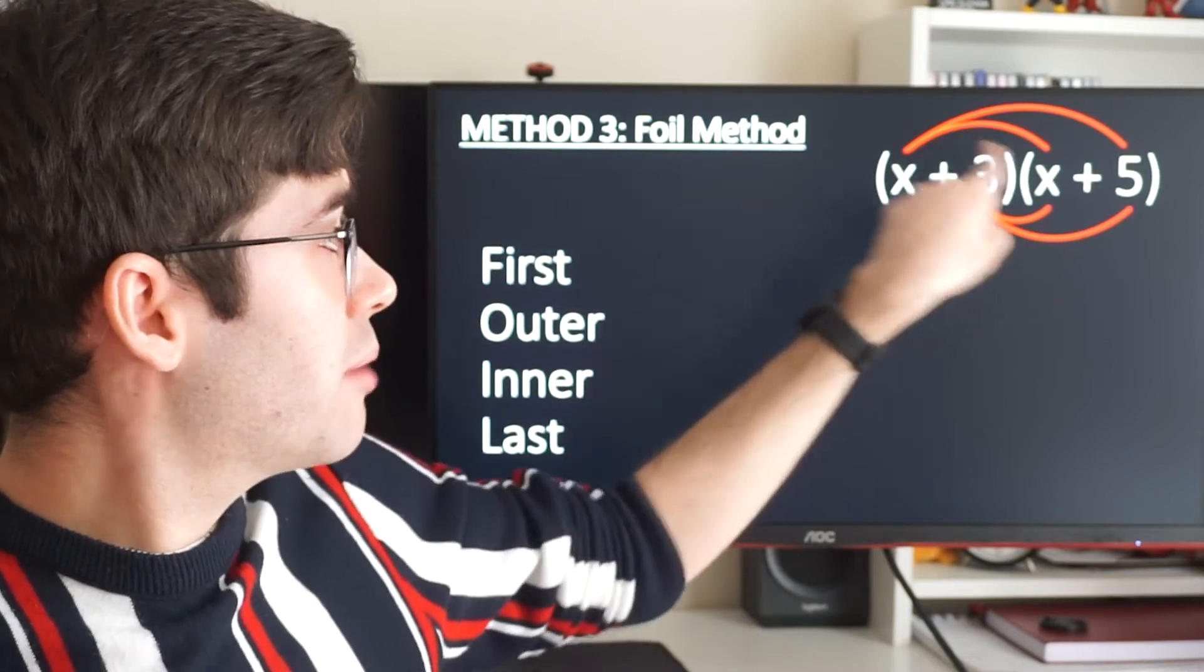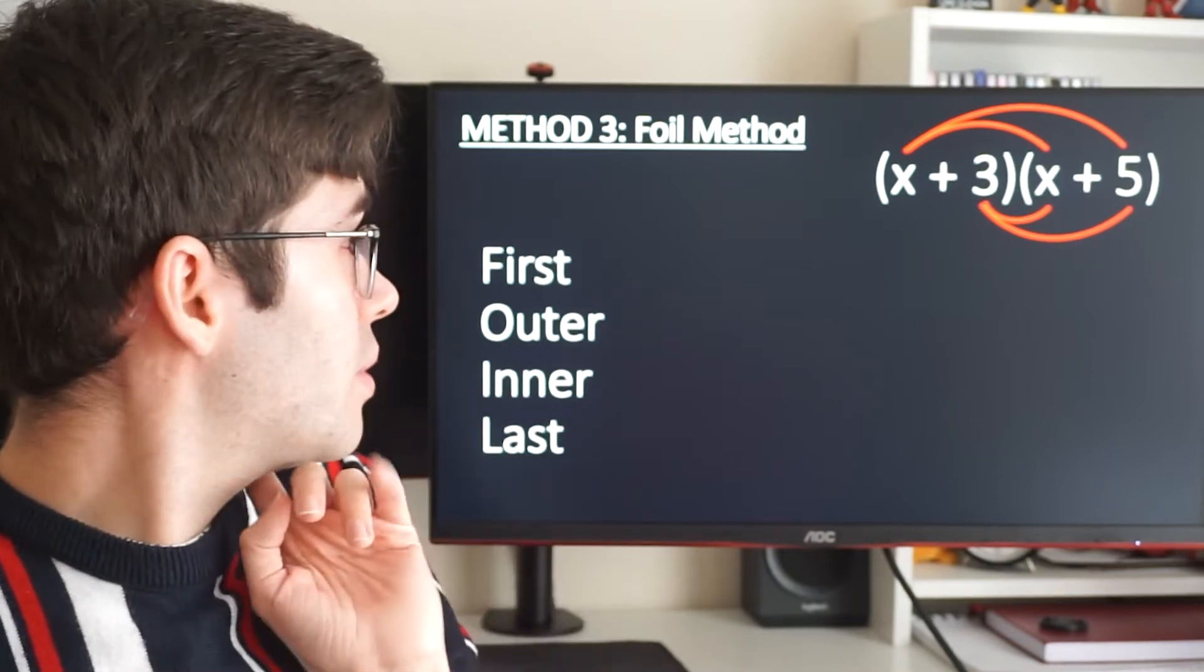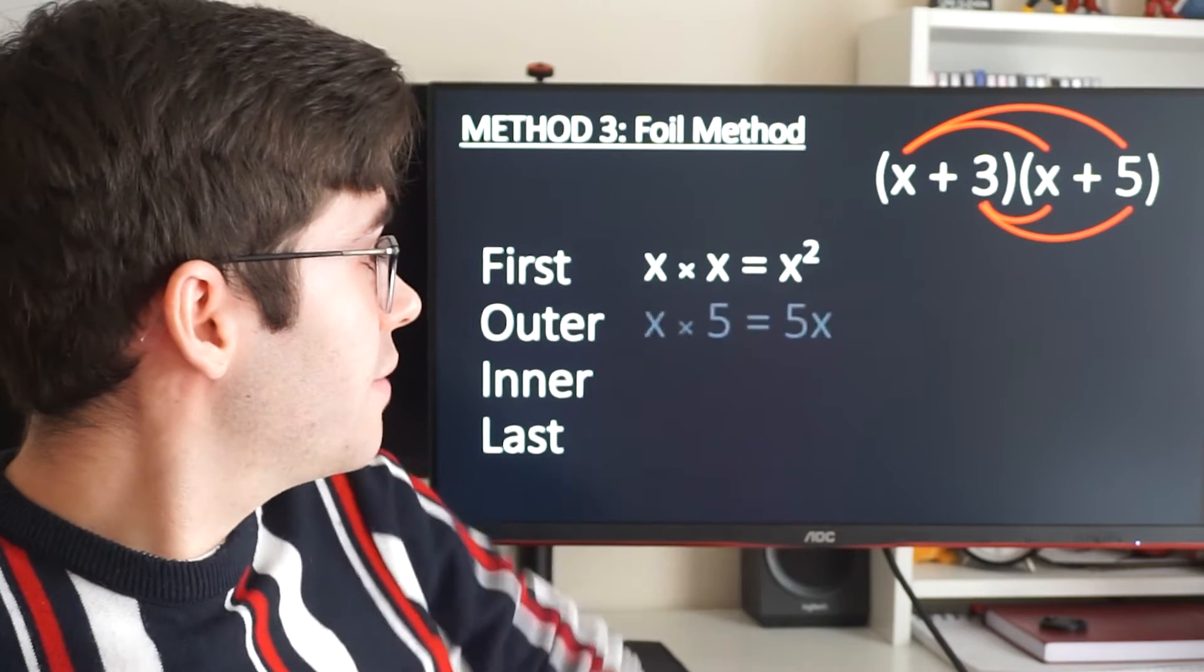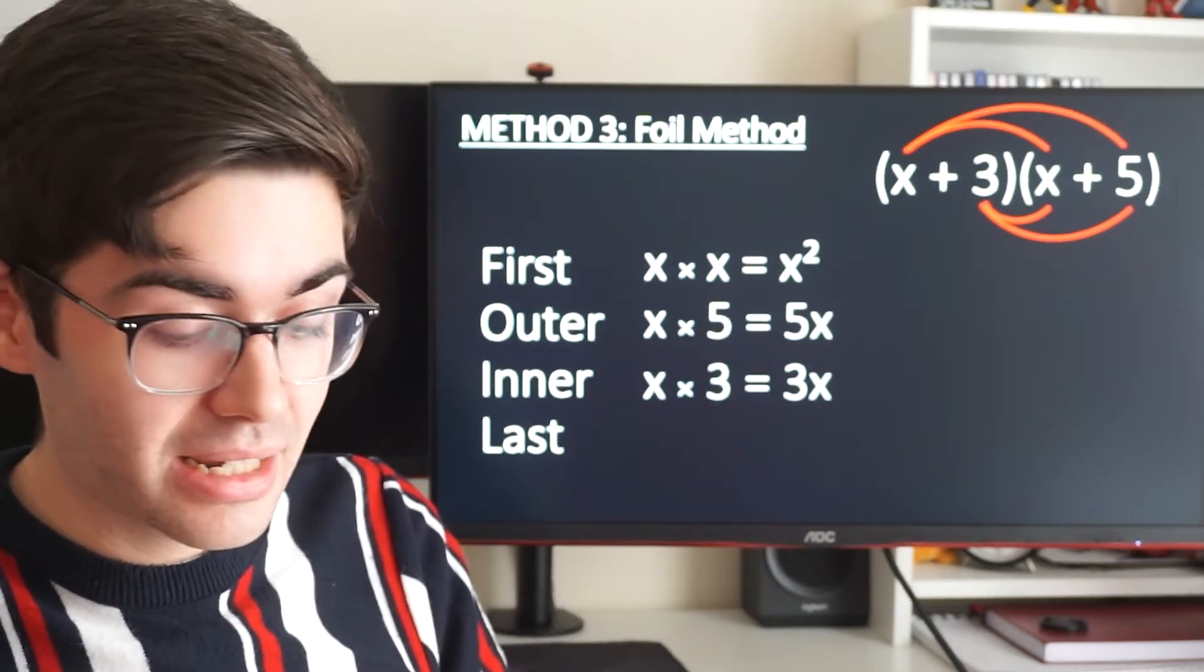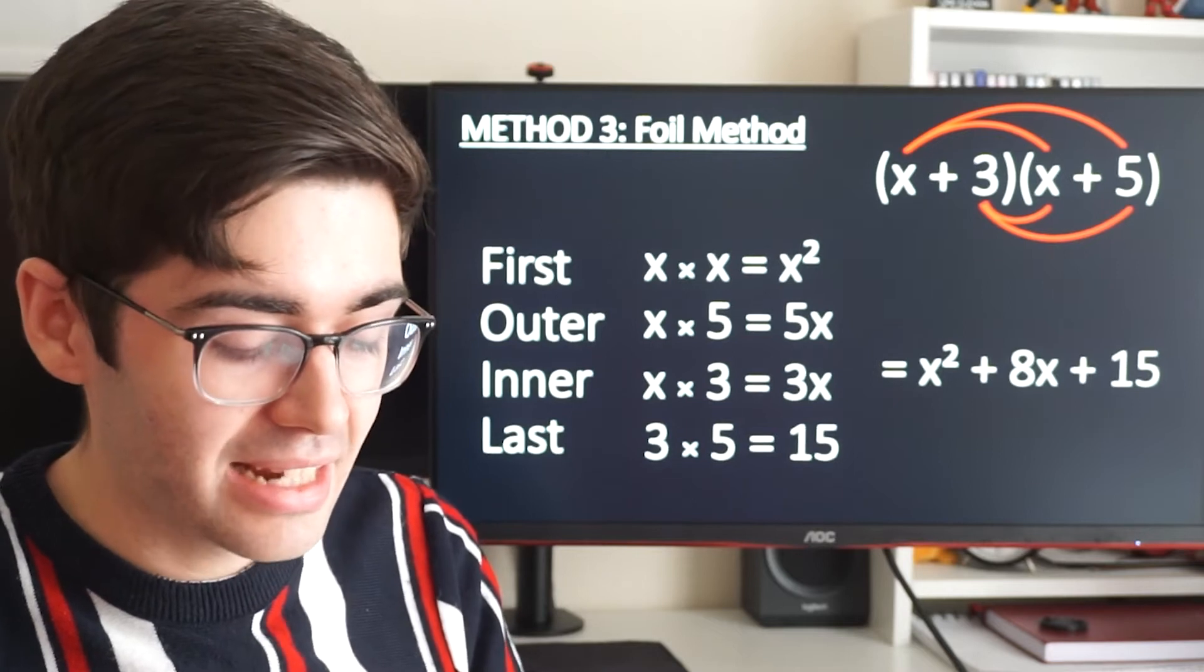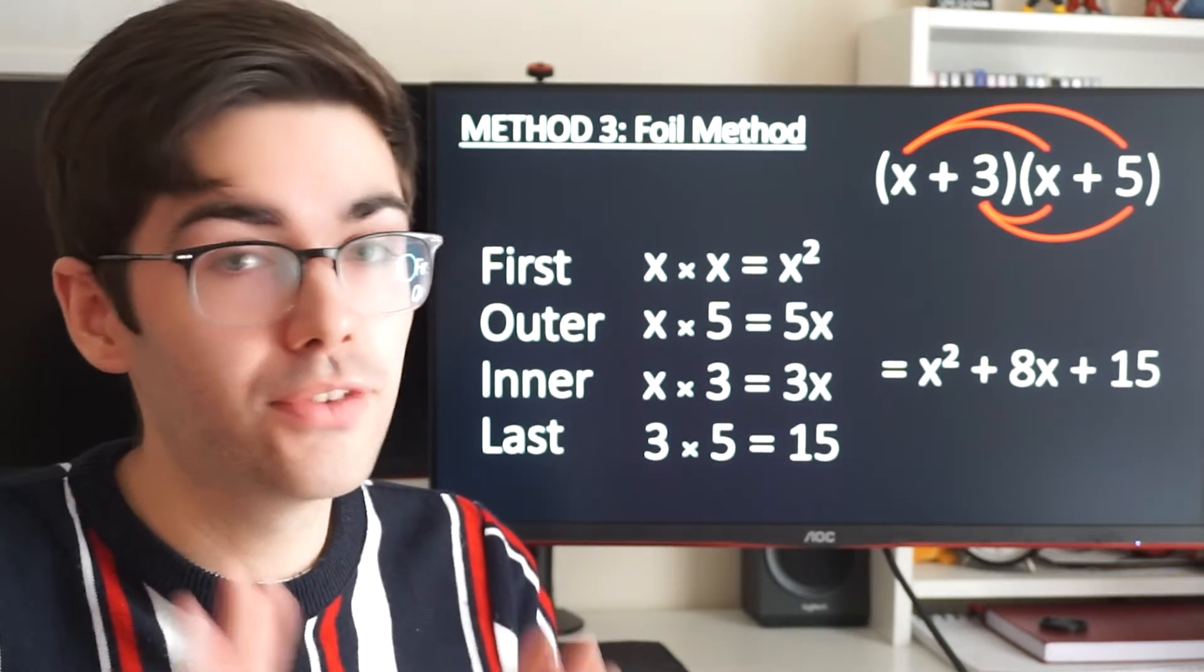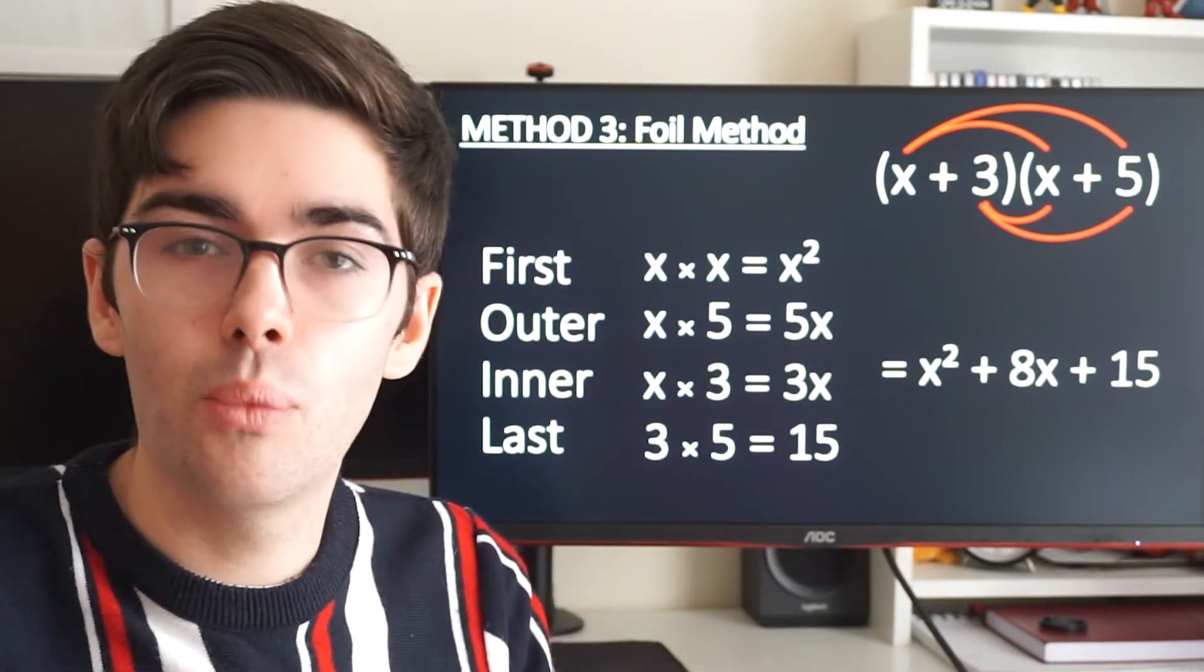So the first in each bracket, the outers, the inners, and then the last in each bracket. And then we times them together. So the first ones, x times x is x squared. The outers, x times 5 is 5x. The inners, 3 times x is 3x. And the last, 3 times 5 is 15. Again, we add it all together, then we get the same answer: x squared plus 8x plus 15. Those are the three methods you can use. If you want to pause now and practice some of those on expanding double brackets, then you are welcome to.